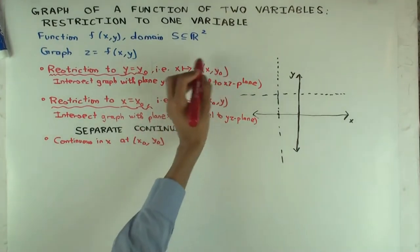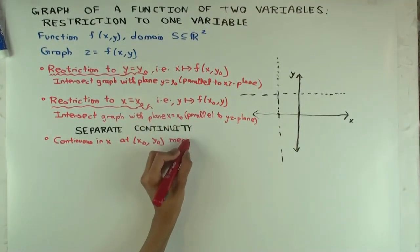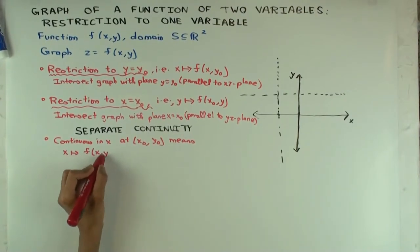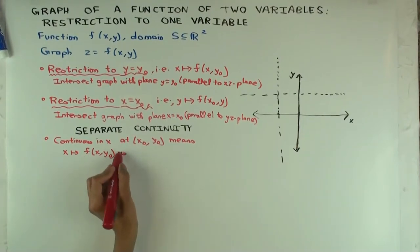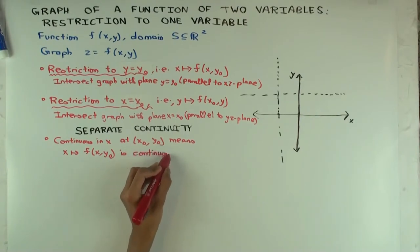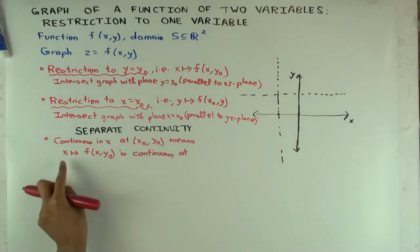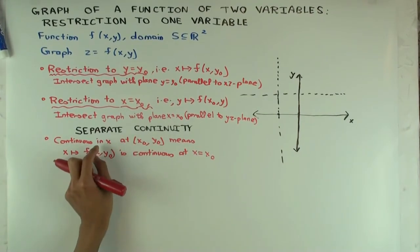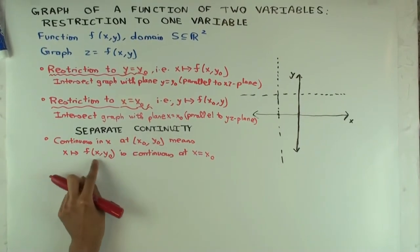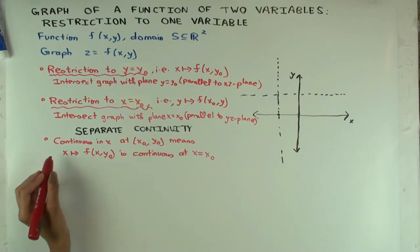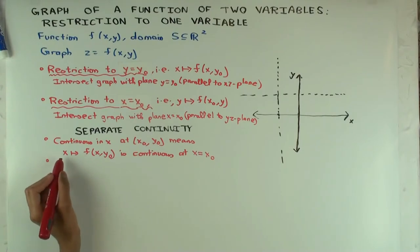This function — saying the function is continuous at x equals x0. So what I'm saying is: this function of two variables is continuous in x at the point x0, y0 if the function of one variable you get by fixing the other coordinate — that is, the function sending x to f of x, y0 — is continuous at x equals x0. Similarly, you can define continuous in y. Continuous in x everywhere means this holds at every point, subject to one-sided continuity at boundary points.